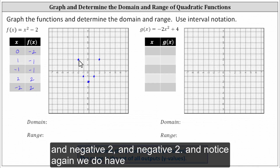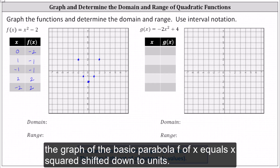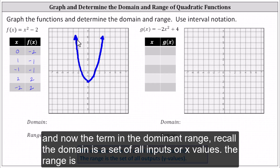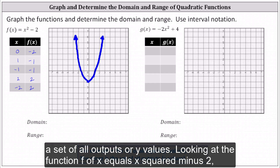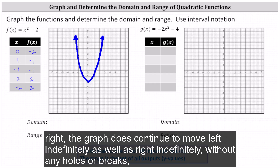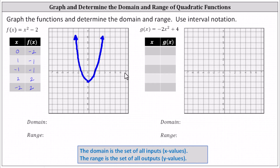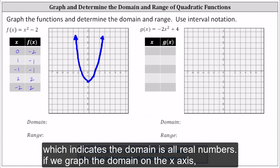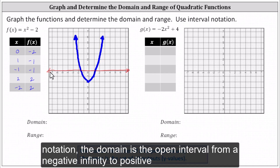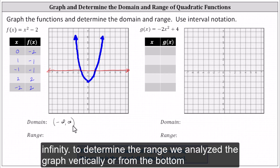Notice we have the graph of the basic parabola f of x equals x squared shifted down two units. To determine the domain and range, recall the domain is the set of all inputs or x values, and the range is the set of all outputs or y values. For f of x equals x squared minus two, x can be any real number. Analyzing the graph horizontally, the graph continues left and right indefinitely without any holes or breaks, indicating the domain is all real numbers. Using interval notation, the domain is the open interval from negative infinity to positive infinity.